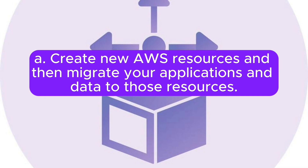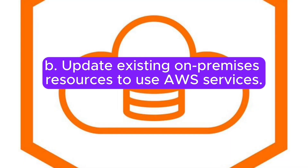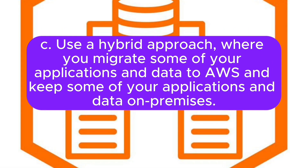For example, you can use Terraform to: A) create new AWS resources and then migrate your applications and data to those resources; B) update existing on-premises resources to use AWS services; or C) use a hybrid approach, where you migrate some of your applications and data to AWS and keep some on-premises.